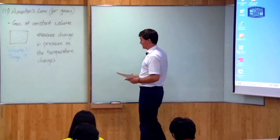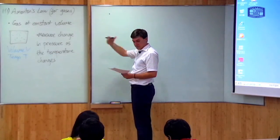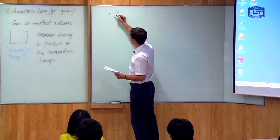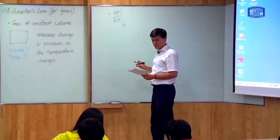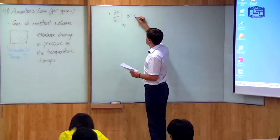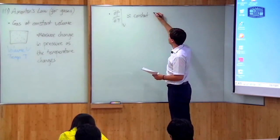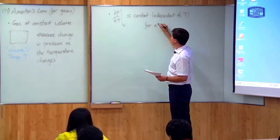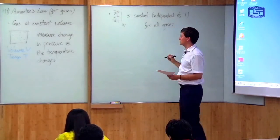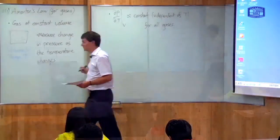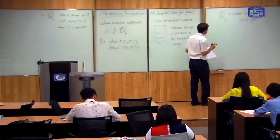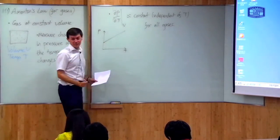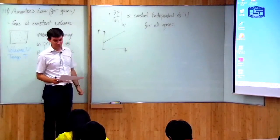If you do that experiment, you find two things. The first is that the change in pressure as a function of temperature is almost a constant — in other words, the partial derivative of pressure with respect to temperature at constant volume is approximately constant, i.e. independent of temperature, for all gases. What that means is if you were to plot P against T, you would get a straight line, and a straight line has a constant gradient.